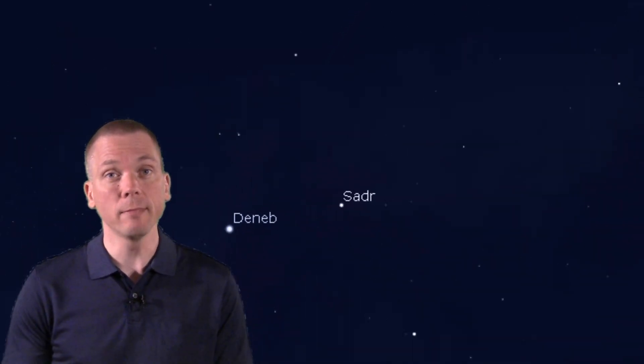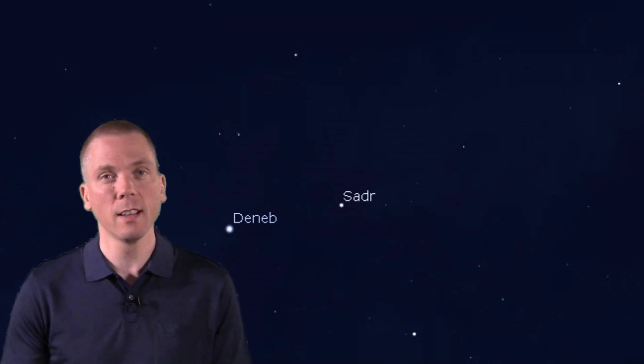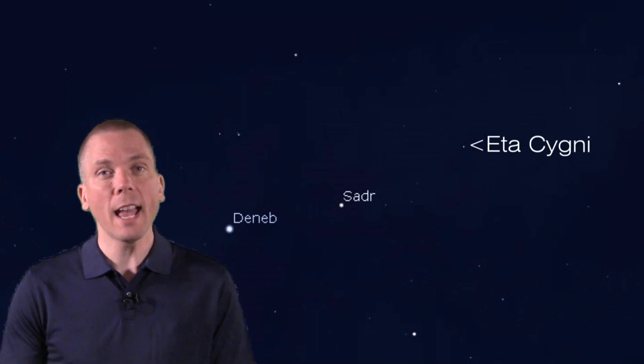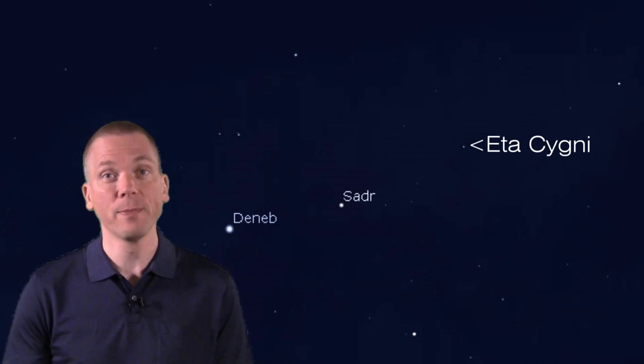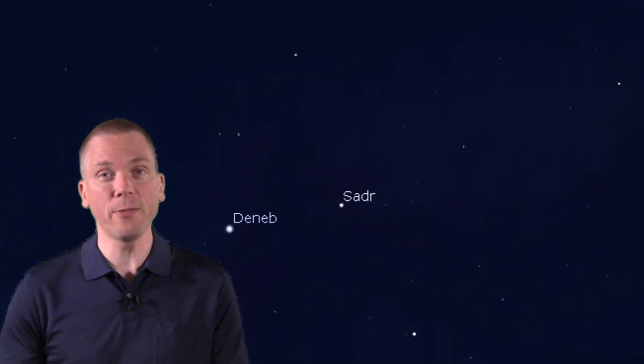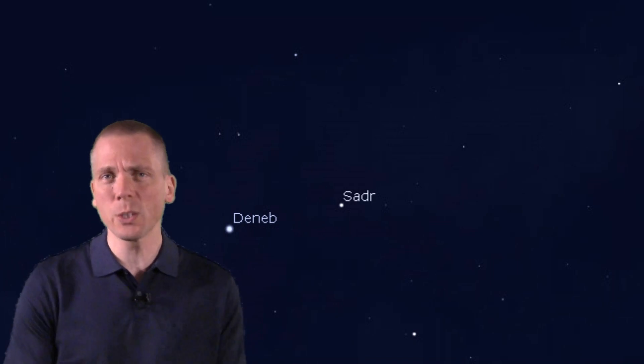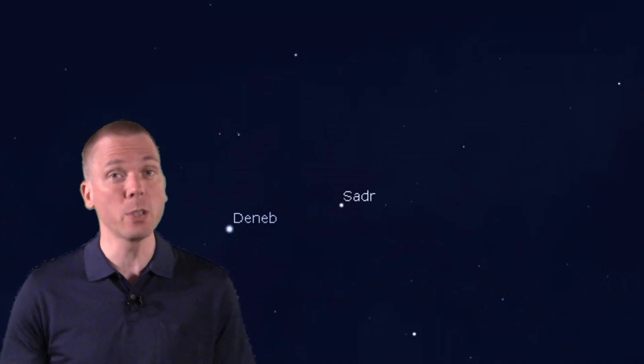Between these two stars of Cygnus are Sadr, the 2.2 magnitude star at the intersection of the cross, and 3.8 magnitude Eta Cygni, not quite halfway between Sadr and Albireo. This is our starting point for this week, so if you can't quite see this star naked eye, use binoculars or magnified finder.